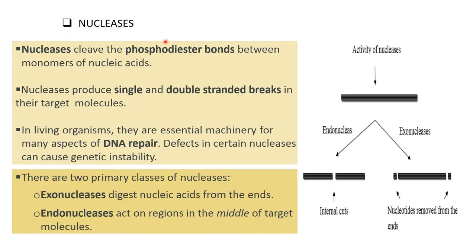Nucleases cleave the phosphodiester bond between monomers of a nucleic acid. Nucleases produce single or double strand breaks in their target molecules. In living organisms, they are essential machinery for many aspects of DNA repair. Defects in certain nucleases can cause genetic instability. There are two types of nucleases: endonucleases and exonucleases.